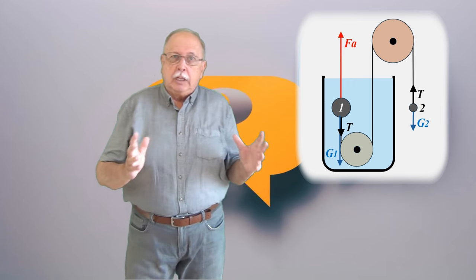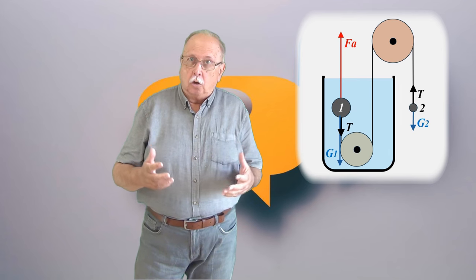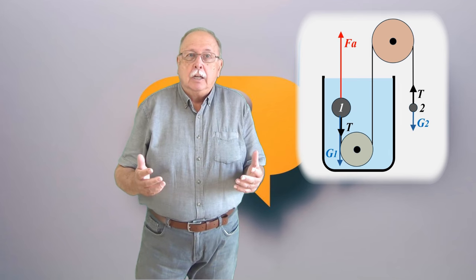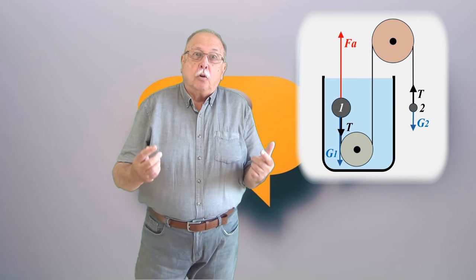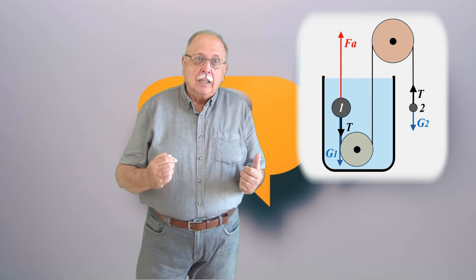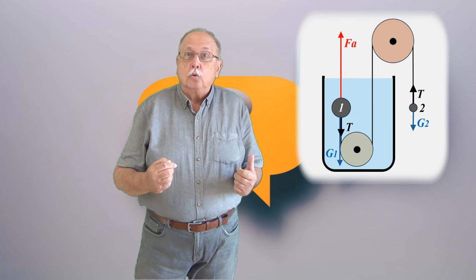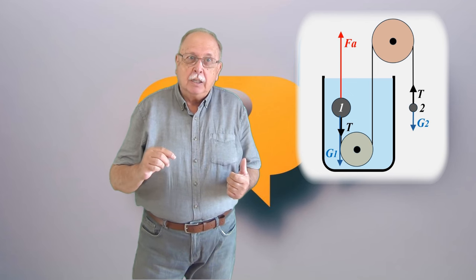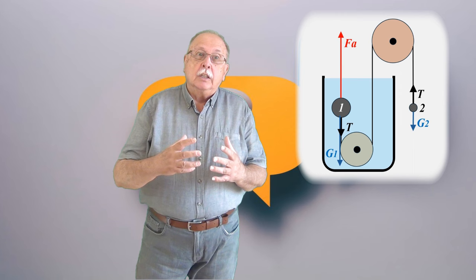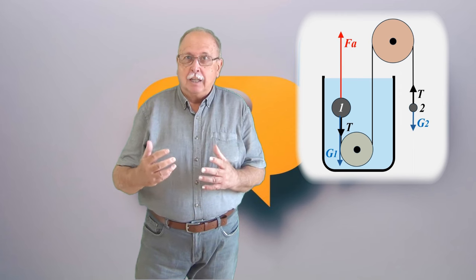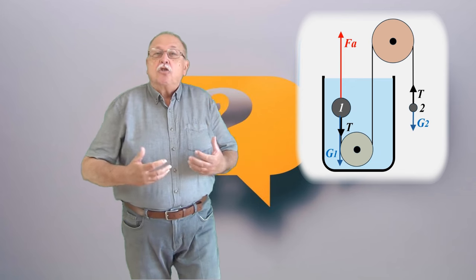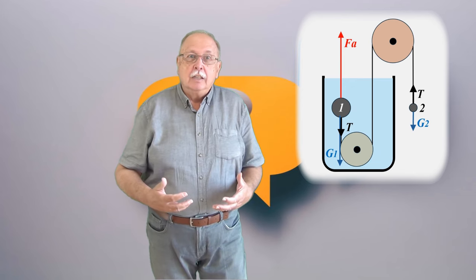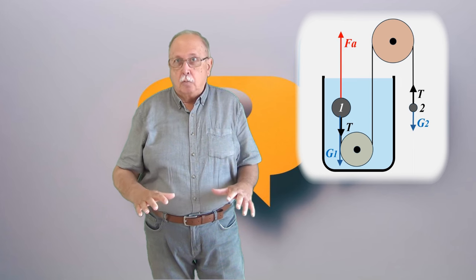1. Dacă schimbăm corpurile între ele, suma greutăților lor rămâne evident aceeași. Greutățile lor nu se schimbă. Dar forța arhimedică scade, deoarece acum avem un corp mai mic în apă, adică este dezlocuită o cantitate mai mică de apă. Și înseamnă că noua forță arhimedică nu mai poate echilibra cele două greutăți. Deci corpurile vor coborî.